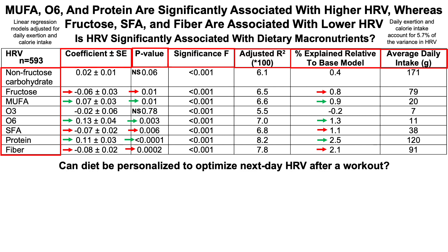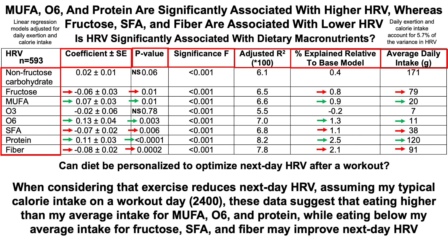This raises the question: can diet be personalized to optimize next-day heart rate variability after a workout? Based on my average daily intake and assuming a typical calorie load on a workout day, this suggests eating more than 20 grams per day of monounsaturated fatty acids, more than 11 grams per day of omega-6, and more than 120 grams of protein, but less than 79 grams per day of fructose, less than 38 grams per day of saturated fatty acids, and less than 91 grams per day of fiber may optimize my next-day HRV. I intend to follow this path and re-evaluate my data at a future point.